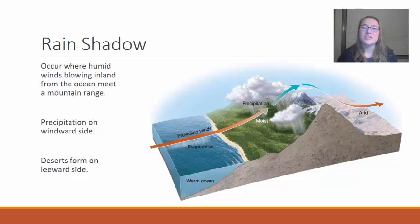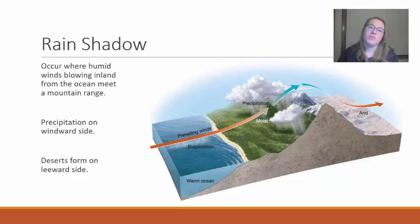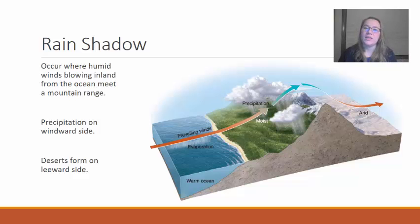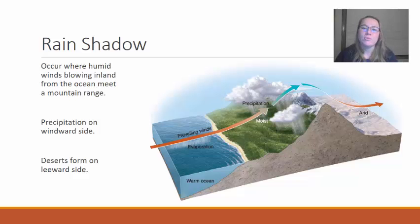Now I want to get into one of the ways that the geography of the Earth really impacts climate, and that is called a rain shadow. A rain shadow occurs when you have a mountain range near an ocean and you have this warm humid air blowing in off the ocean and it runs right into that mountain range.